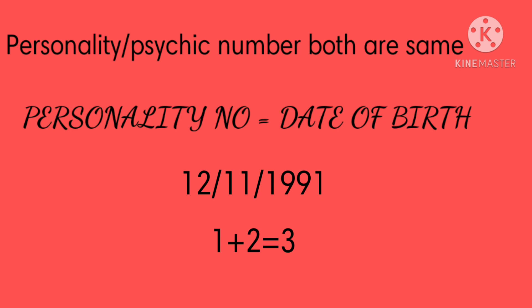The personality number is also known as the psychic number. It generally indicates what one thinks about themselves. This number activates throughout life, but it is very powerful up to the age of 35, after which the life path number or destiny number starts playing its role.